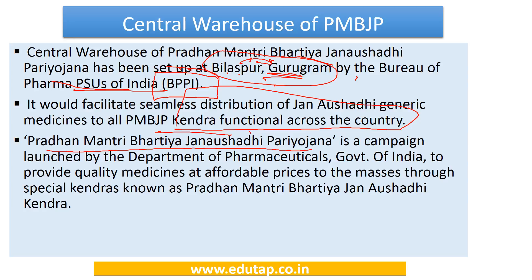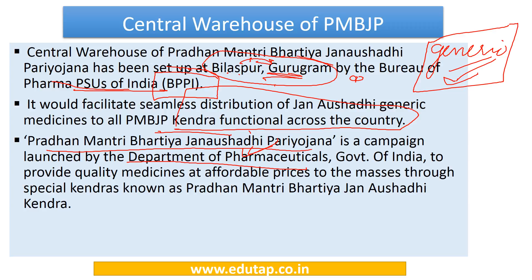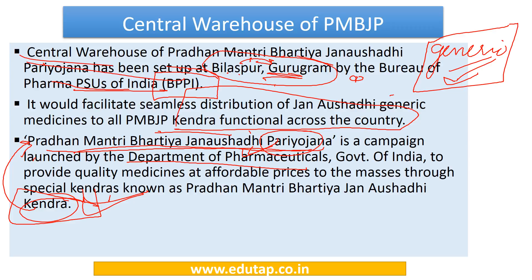PM BJAY is a campaign launched by the Department of Pharmaceuticals of the Government of India. It provides generic medicines — unbranded medicines that cost much less than branded medicines, but have the same efficacy and efficiency. These are also known as Jan Aushadis and are supplied to the masses at affordable prices through Pradhan Mantri Bharatiya Jan Aushadi Kendras. To facilitate seamless distribution of generic medicines to all these kendras across India, this central warehouse has been set up at Bilaspur in Gurugram — the new name of Gurgaon, in Haryana.